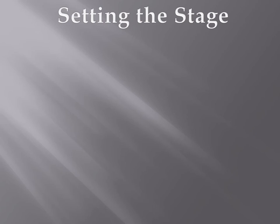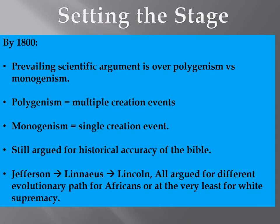It's this whole notion of polygenism versus monogenism. Was there one creation event in which God created all living creatures on earth at once, or were there multiple creation events? So they're still framing things within a religious argument, still trying to find historical accuracy for the Bible.